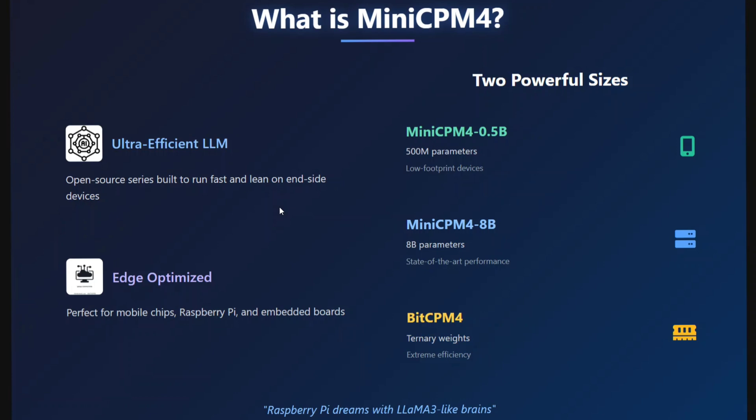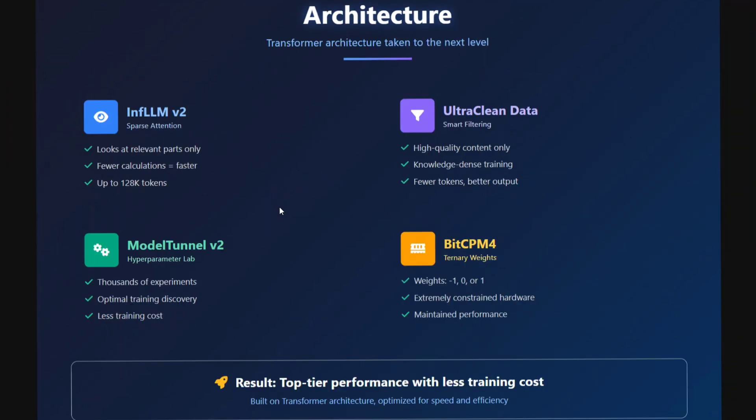They have released the model in two major sizes and multiple variants: MiniCPM 4 0.5 billion and MiniCPM 4 8 billion. Very interestingly, they have also released BitCPM 4 - similar to BitNet - a model with ternary weights of only zero, one, and minus one. I'll be covering BitCPM 4 separately in another video, but for now let's summarize MiniCPM 4.